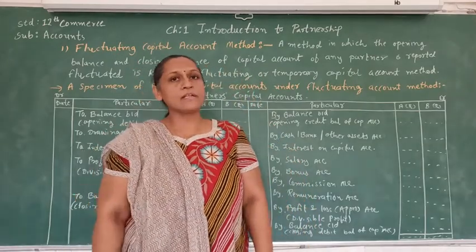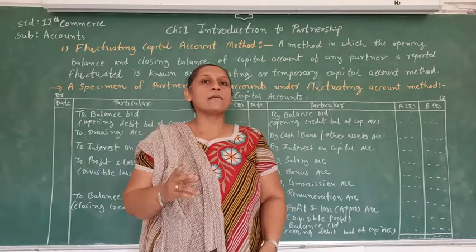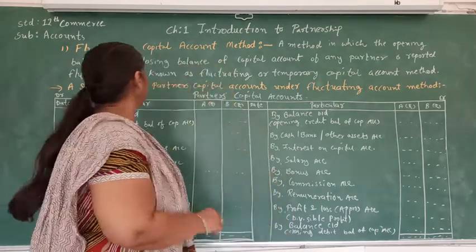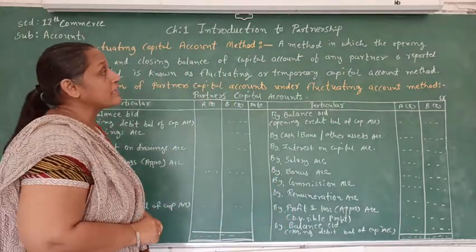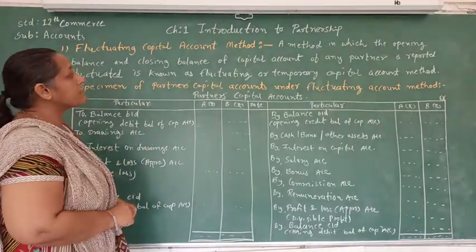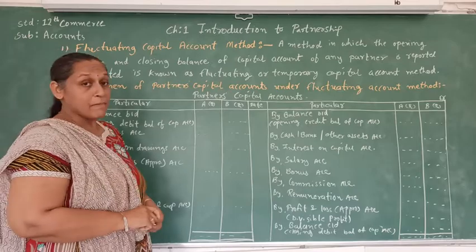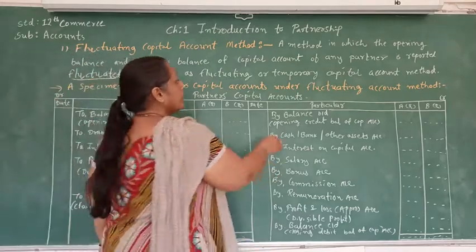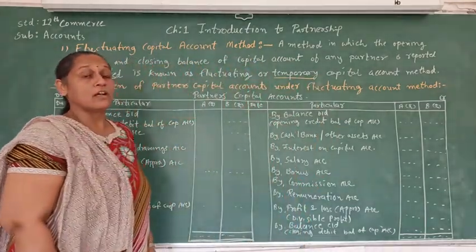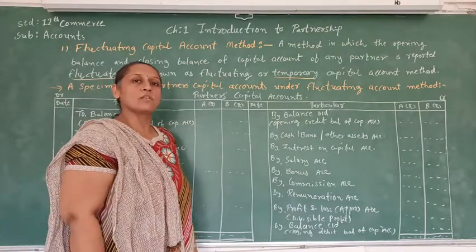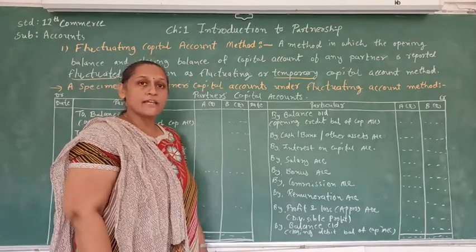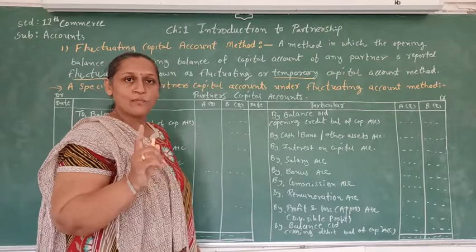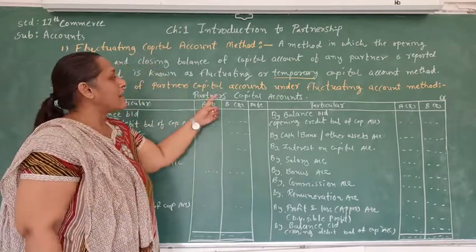Now let's see the partner's capital account methods, where we are going to see two types of capital accounts. The very first is the fluctuating capital account method. Fluctuating capital account method means a method in which the opening balance and closing balance of the capital account of any partner is reported as fluctuating. This is known as the fluctuating or temporary capital account method. In this method, we prepare only one account, called the partner's capital account.